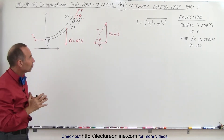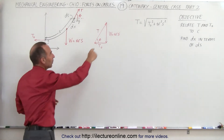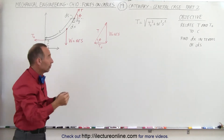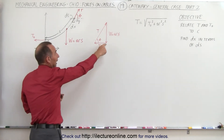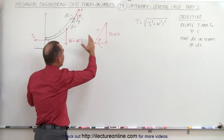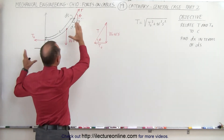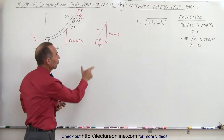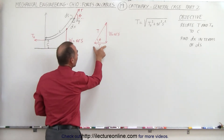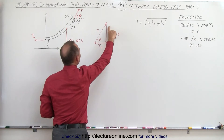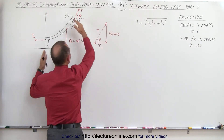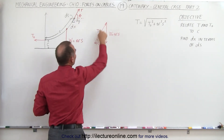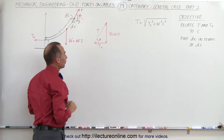If we sum those three forces together, we end up with a triangle, and the triangle must meet at one point. The net force must be zero because nothing is moving or accelerating. Notice T sub knot, the weight of the cable section — weight per unit length times S — and the tension T at the end of the cable.